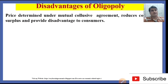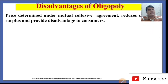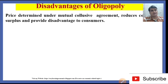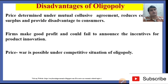As for the disadvantages of Oligopoly: the price determined under mutual collusive agreement reduces consumer surplus and provides disadvantage to consumers. Consumer surplus is the difference between the market price — the price at which the commodity is sold — and the demand price, which is the price a consumer is willing to pay. Firms make good profit and could fail to provide incentives for product innovation. Price war is also possible under a competitive situation of Oligopoly.